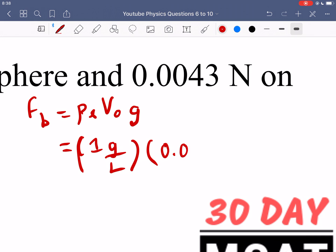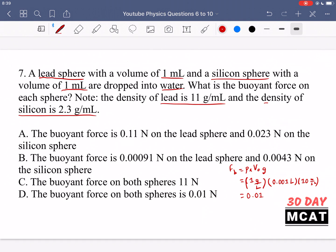So gravity, let's just say it's 10 meters per second squared. And that ends up equaling 0.01 Newtons. So D is our correct answer.